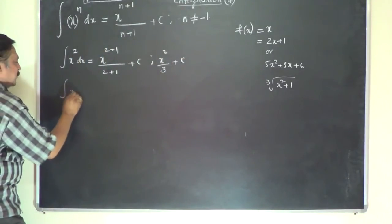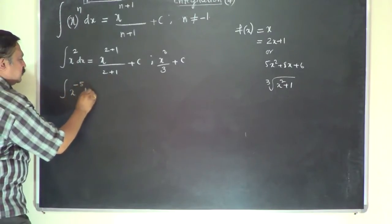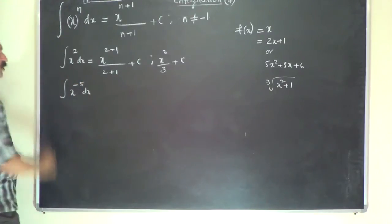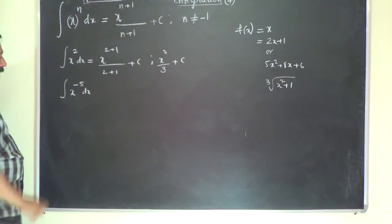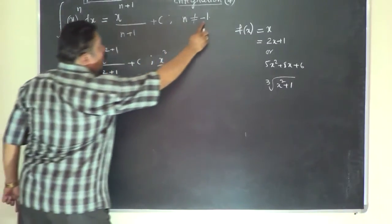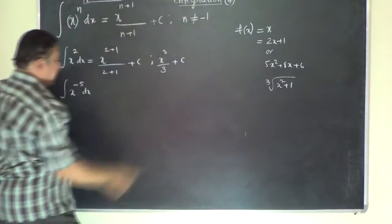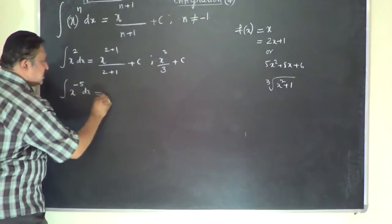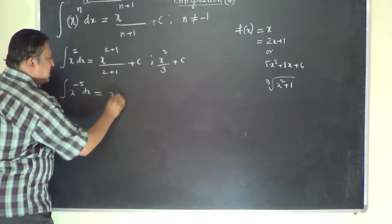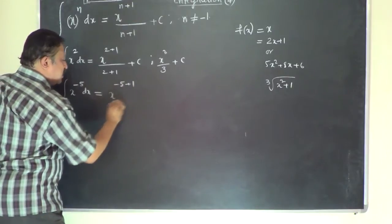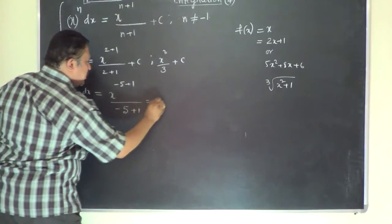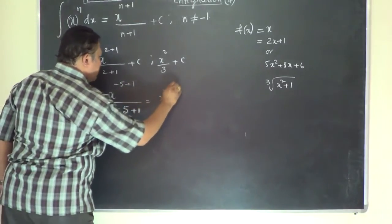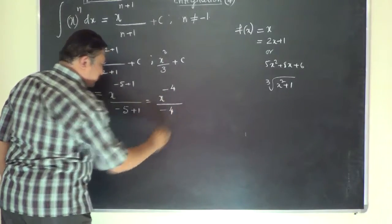Now take the integral of x to the power of minus 5 dx. Here n is negative, but n is not equal to negative 1 — it is equal to negative 5, so the formula is applicable. This gives x to the power of minus 5 plus 1 divided by minus 5 plus 1, which is x to the power of minus 4 divided by minus 4.